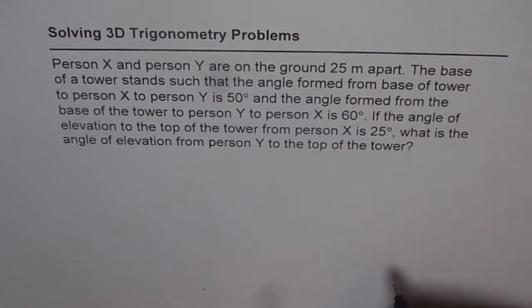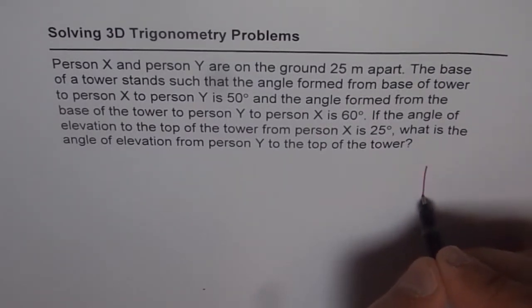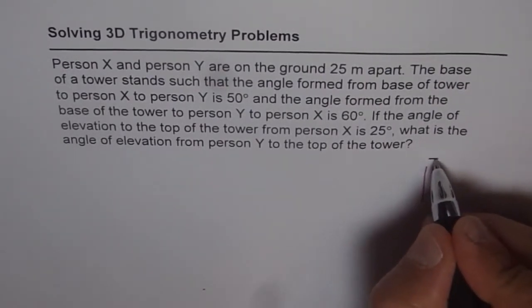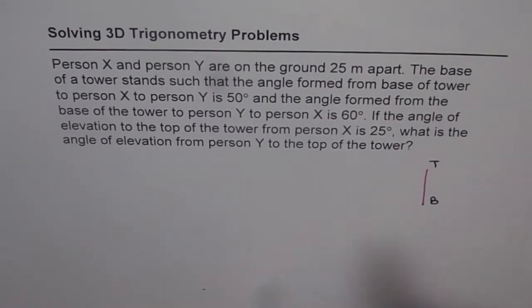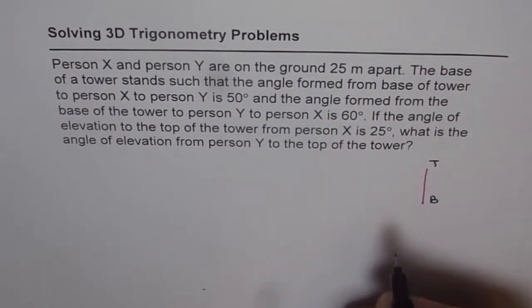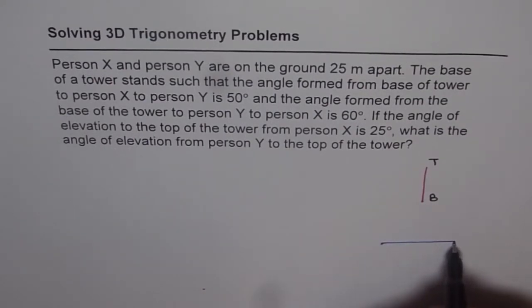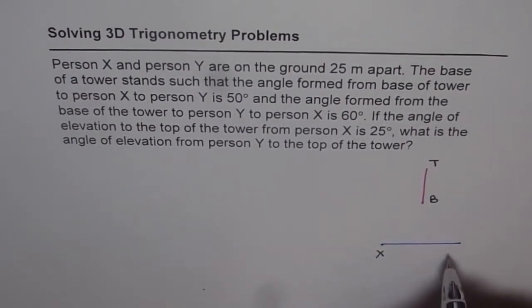In this situation, let us first sketch and then try to understand the question itself. We have a tower here — let us name it TB, where T is the top of the tower and B is the base. There are two persons X and Y who are on the ground, and the distance between them is 25 meters.